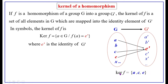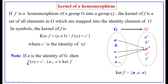Therefore, kernel of F equals {A, C, E}. This is how we find the kernel of a given homomorphism. Note: if E is the identity of G, then F(E) must equal E', which implies E belongs to ker(F). That is, at least one element exists in ker(F), and therefore the kernel of F is non-empty.